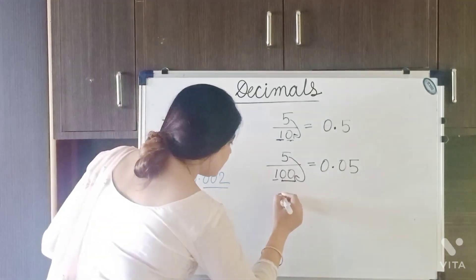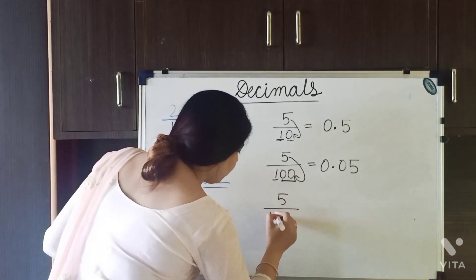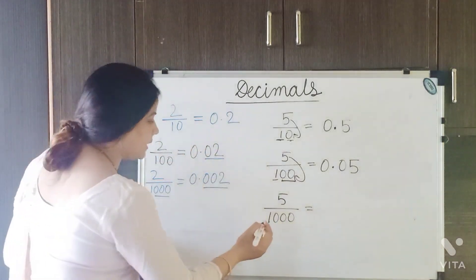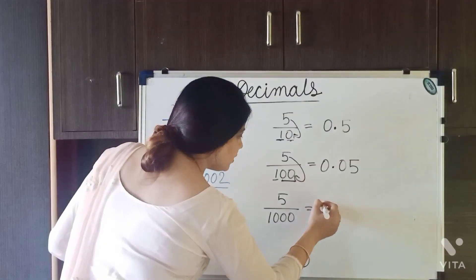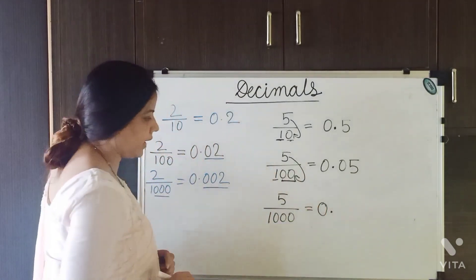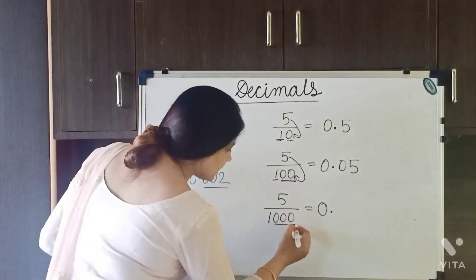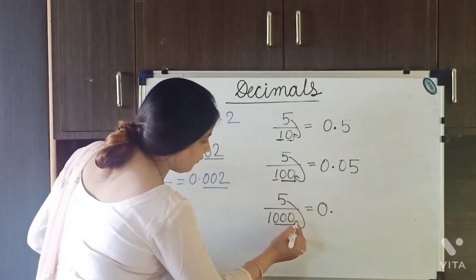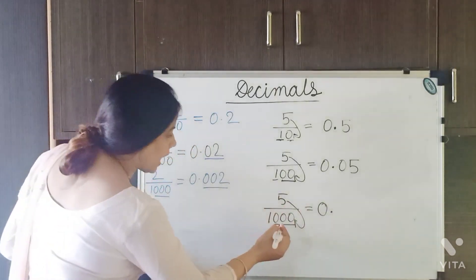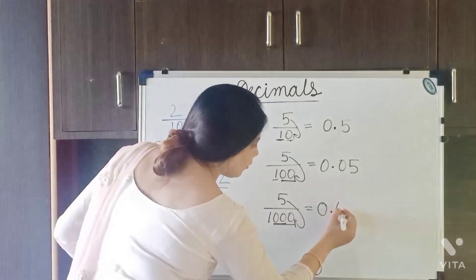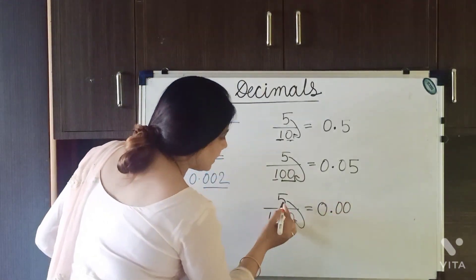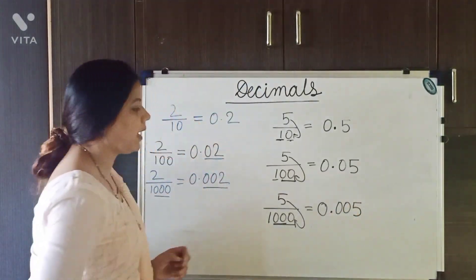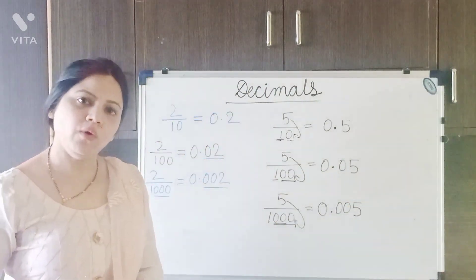If it is 5 upon 1000, again the 1 becomes 0 and we give a decimal point. There are 3 digits after the 1 in the denominator. The 5 takes the place of the last 0, so we write two 0s before the 5. This becomes 0.005.